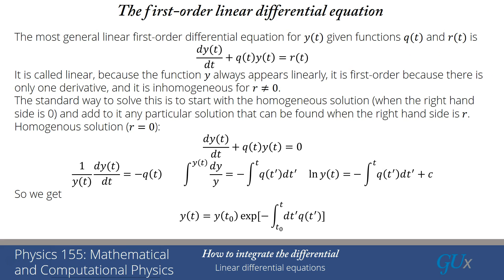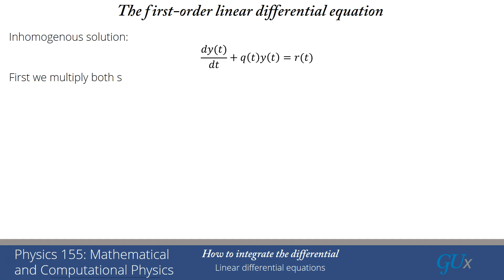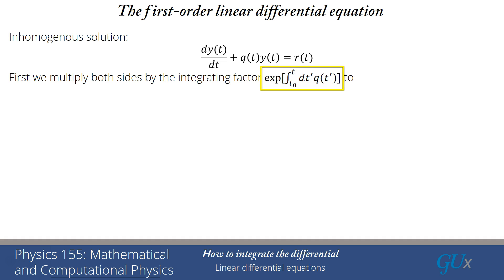We've gotten the solution to the homogeneous problem. Now we move on to the inhomogeneous problem. We bring back r(t), and we're going to multiply both sides by what is called an integrating factor. It looks almost exactly like what we just worked out — it's the exponential of the integral from t₀ to t of dt' q(t') — but notice it's with a plus sign, not a minus sign.